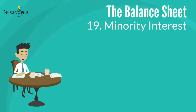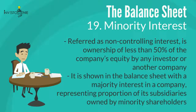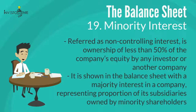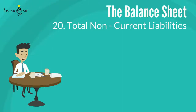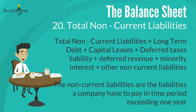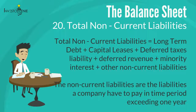Nineteen: minority interest, also referred to as non-controlling interest, is ownership of less than 50% of a company's equity by any investor or another company. It is shown on the balance sheet with the majority interest, representing the proportion of subsidiaries owned by minority shareholders. Details of these investors can be found in the notes section of the company's annual reports. Twenty: total non-current liabilities is the sum of long-term debt, capital leases, deferred taxes liability, deferred revenue, minority interest, and other non-current liabilities — all liabilities the company has to pay in a period exceeding one year.